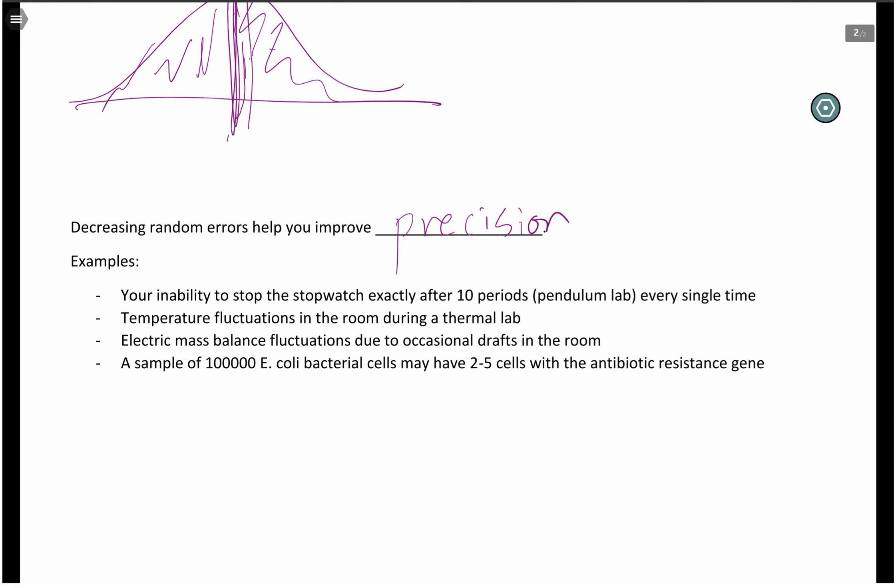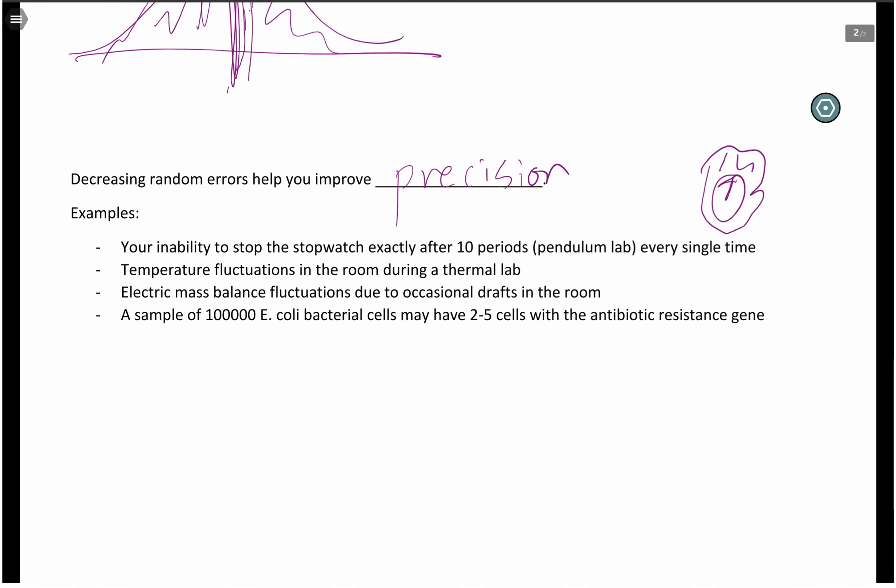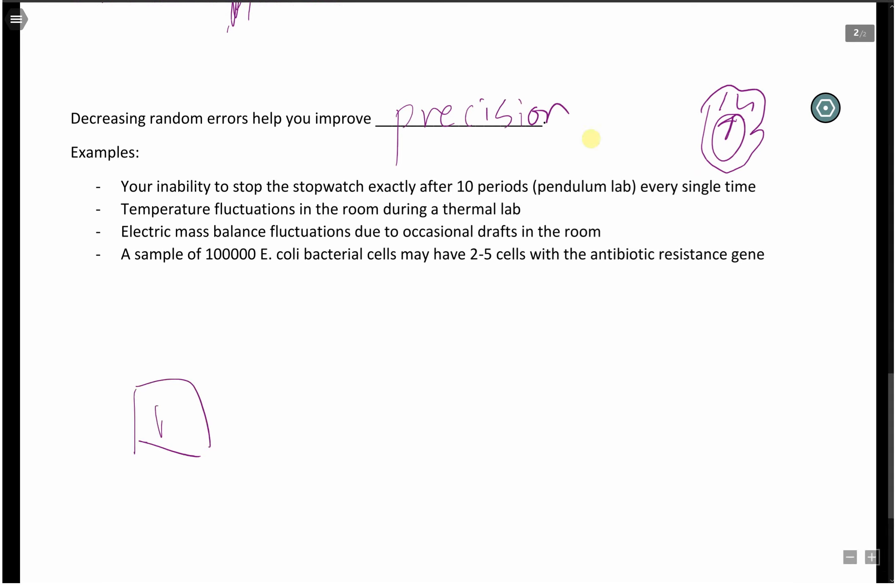Here are a few examples. Your inability to stop the stopwatch exactly after 10 periods every single time. We talked about this in the lab when we talked about timing. Another example is temperature fluctuations in the room during a thermal lab. So let's say you're trying to do a calorimetry lab. Your room temperature might sometimes fluctuate because it might be very cold outside or very hot outside. Another example is your mass balance fluctuations in a classroom. Let's say there are drafts in the room causing your readings to go up or down to fluctuate. These will also count as errors to attribute to random errors.